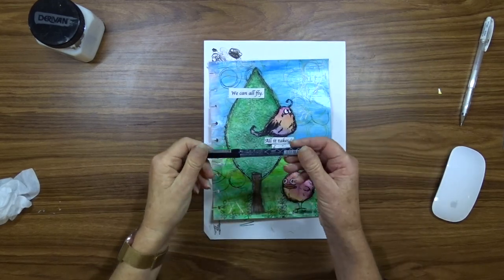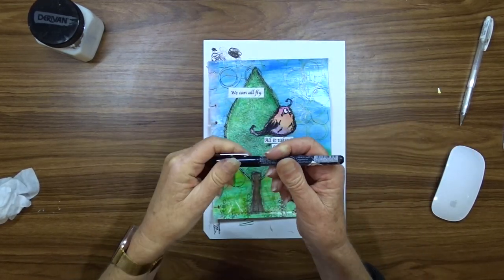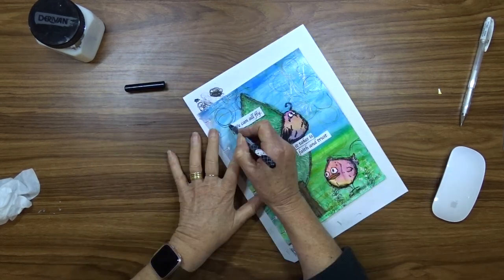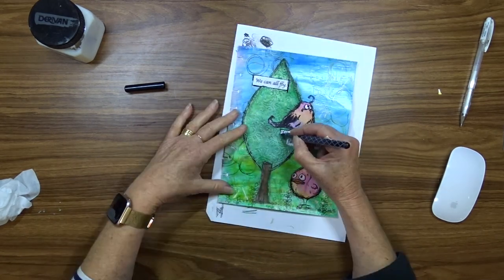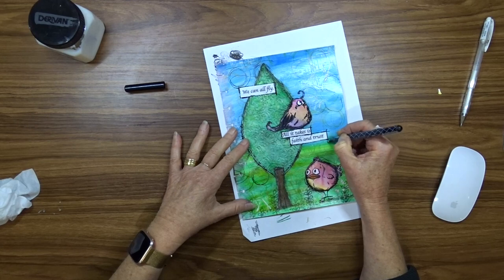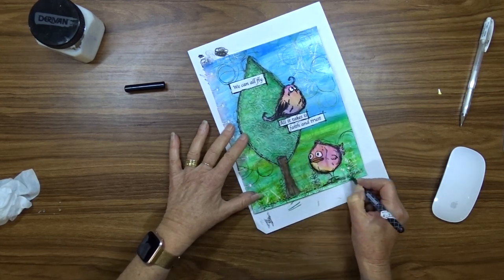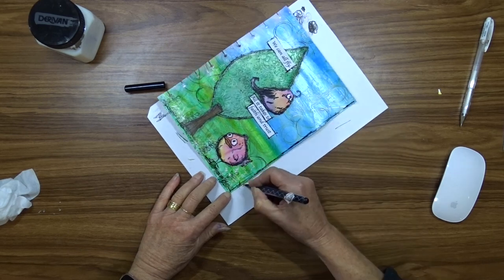Anyway I'm using my matte gel medium to attach my title to my page. I then use my Pigma Micron black pen to outline the quote and I extend a little above and beyond the actual quote just so that it doesn't look too boxed in. And I do this for all of the pieces of the quote.